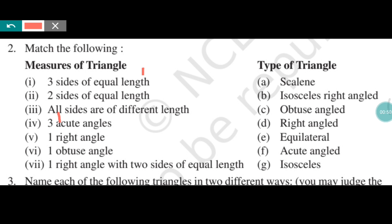According to the given definitions, we will match the following. Three sides of equal length — in an equilateral triangle, all three sides are equal, so this will be matched to equilateral triangle. Two sides of equal length — we know that two equal sides are in an isosceles triangle, so this will be matched with isosceles triangle. All sides of different length — this will be matched with scalene triangle.